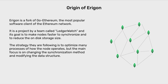Origin of Eragon. Eragon is a fork of GoEthereum, the most popular software client of the Ethereum network. It is a project by a team called LedgerWatch and its goal is to make nodes faster to synchronize and to reduce the on-disk storage size. The strategy they are following is to optimize many processes of how the node operates, but the main focus is on changing the synchronization method and modifying the data structure.